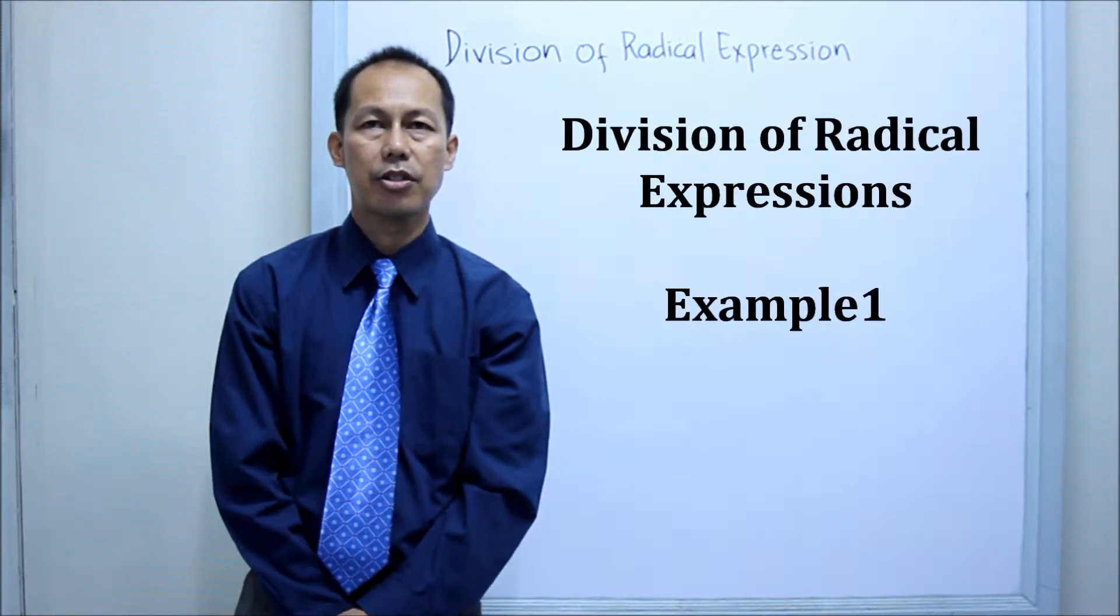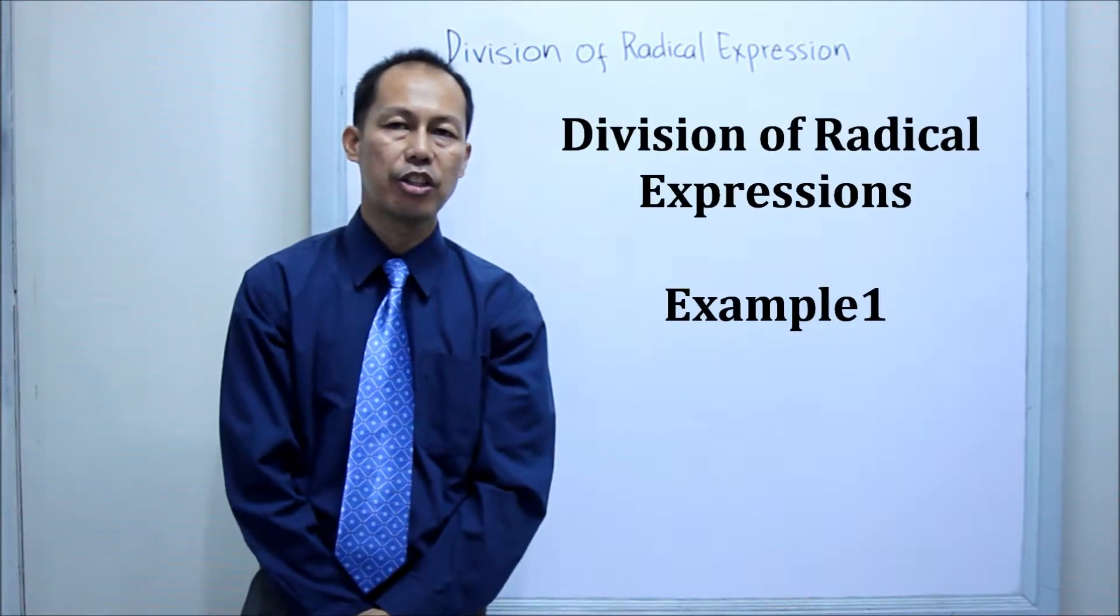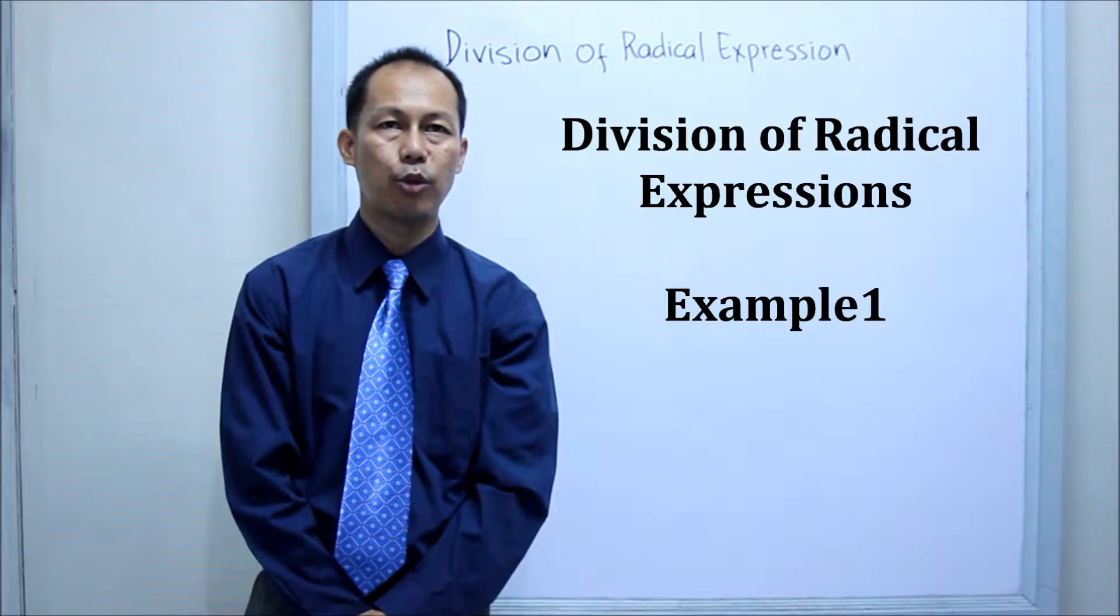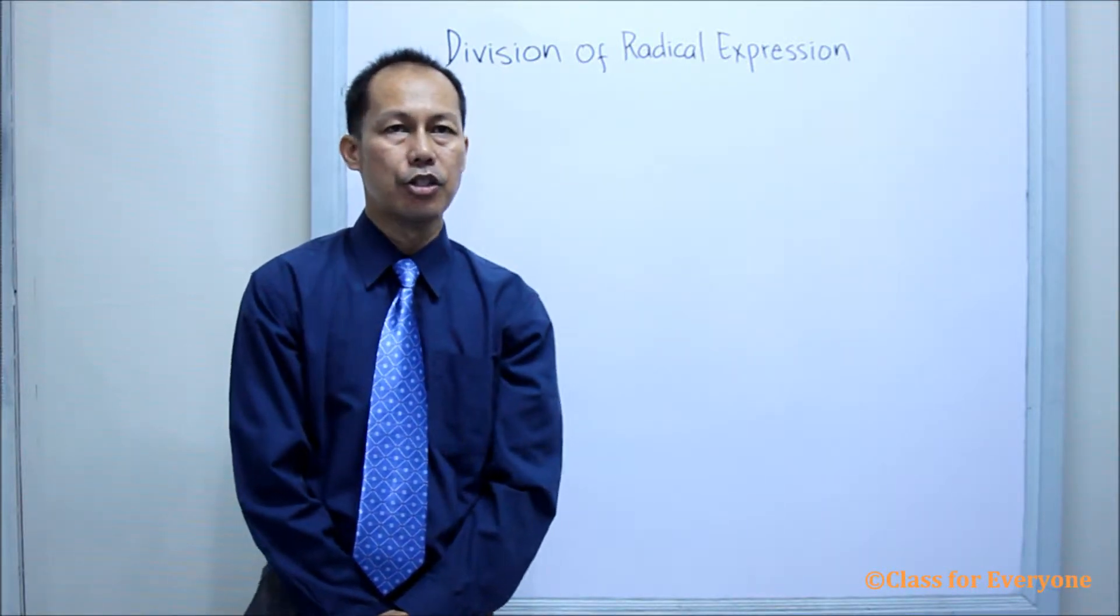In the division law of radicals, the nth root of a quotient is equal to the quotient of the nth root of the numerator and the denominator. In symbols,